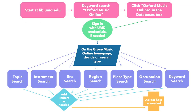As a summary of the process we've just gone through, this slide gives a visual representation of the path from the library homepage to the Grove Music Online homepage, then it branches into a few of the options you'll have once you arrive there, like the topic, instrument, era, region, place type, occupation, and keyword searches, and the limiters.